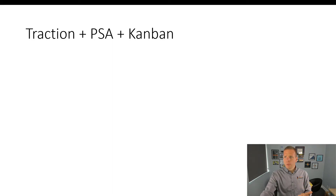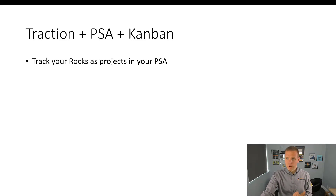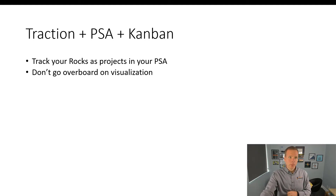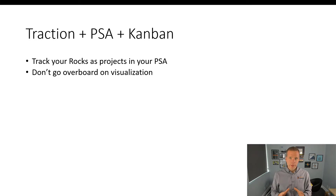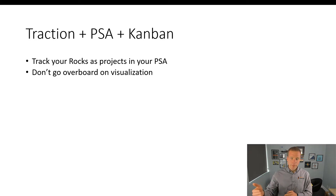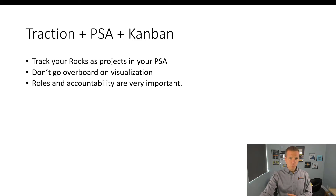So how do you combine Traction EOS, your PSA like ConnectWise or Autotask, and Kanban? We track the Rocks as projects in the PSA. An important thing is not going overboard on your visualization — if you set up your Kanban board and everything is red, then basically nothing is red and nobody cares. Define what good means and highlight the things that matter. Roles and accountability are very important both in Traction and in Kanban — who owns the boards, who sets them up.